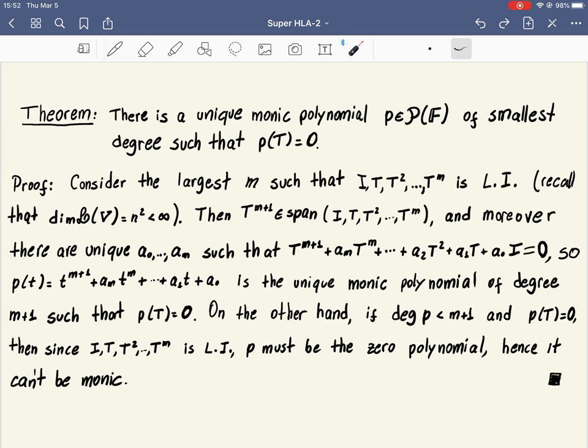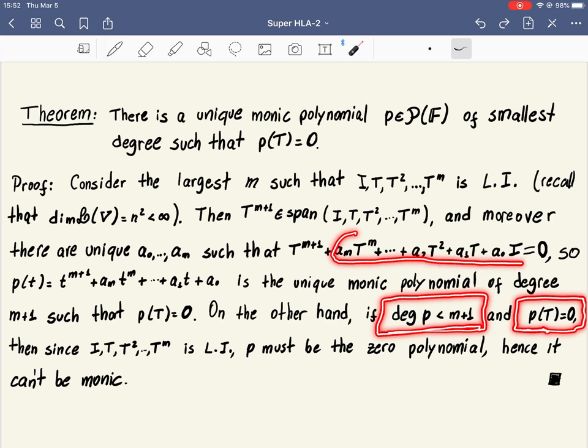Well, why is that true? If we take another polynomial with degree smaller than M plus 1, and such that P of T equals 0, what does it mean? It means there is a polynomial here, not including this term, such that this linear combination of operators give us the 0 operator.